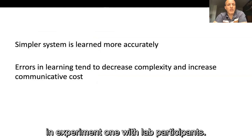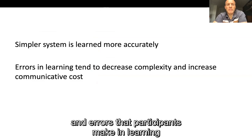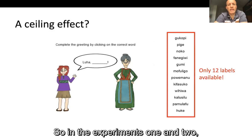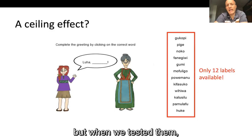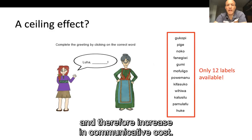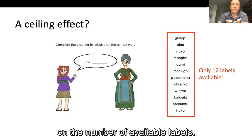We find the same pattern in experiment one with lab participants. One concern is that we might be seeing a ceiling effect: in experiments one and two, participants were trained on and tested with 12-label systems, meaning they were at the ceiling for the number of labels, so any errors would involve dropping labels and therefore increase communicative cost. Perhaps those results are just a ceiling effect on the number of available labels.